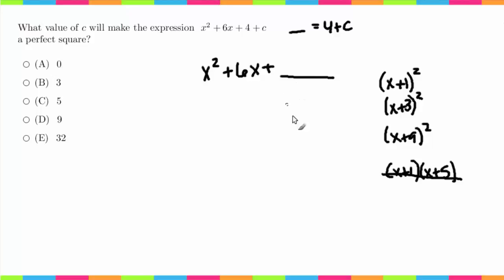So in order to find out what goes in this blank here, we take the B term, divide it by 2, and then we square it. In this case, we'll get (6/2)², which equals 3².